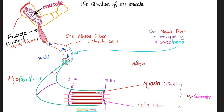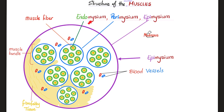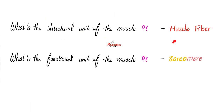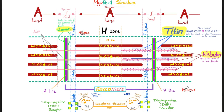The muscle is made of fascicles. The fascicle is made of muscle fibers. The muscle fiber is made of fibrils. The fibrils have Z-lines, and between them you have sarcomeres. Don't forget that your skeletal muscle cells are multi-nucleated. Endomysium, perimysium, epimysium. The structural unit is the muscle fiber. The functional unit is the sarcomere, located between one Z-line and the next Z-line.